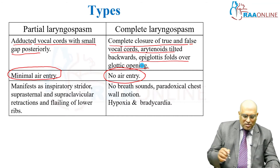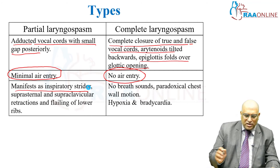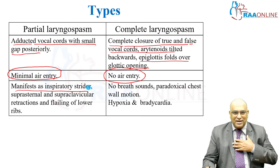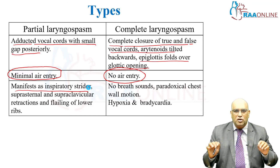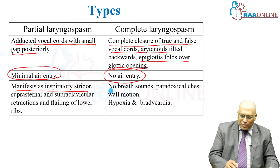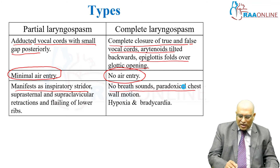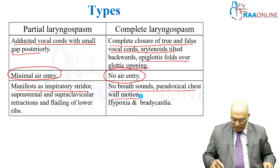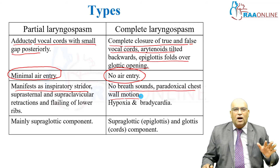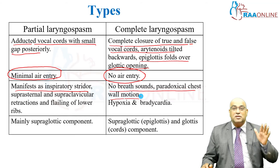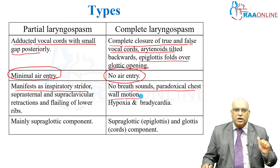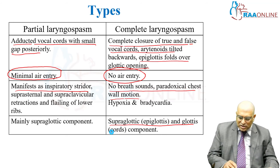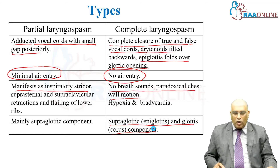Partial laryngospasm manifests as inspiratory stridor, suprasternal and supraclavicular retraction, and flailing of the lower ribs. In complete laryngospasm, there is paradoxical chest motion and hypoxia and bradycardia set in very fast. Partial laryngospasm is mainly a supraglottic component, while in complete there is both a supraglottic as well as a glottic component.